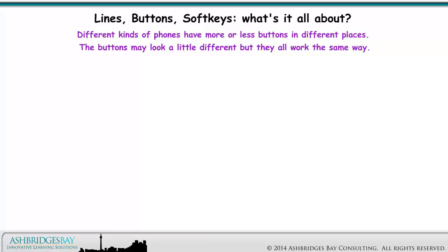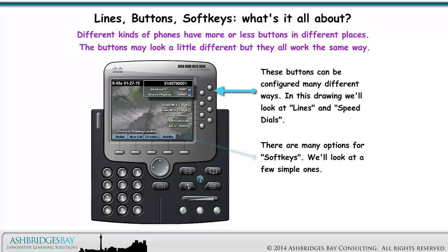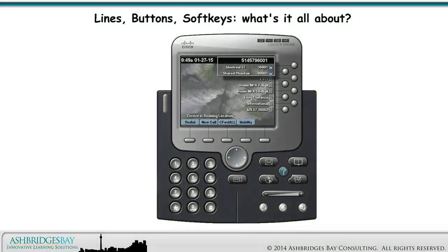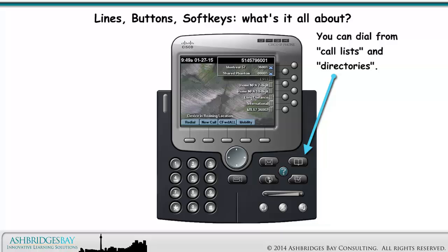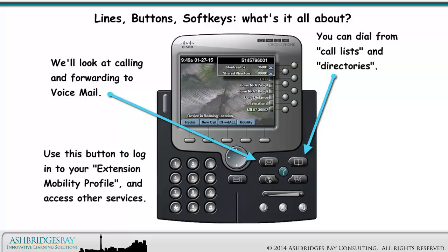Different kinds of phones have more or less buttons in different places. The buttons may look a little different, but they all work the same way. These buttons can be configured many different ways. In this drawing, we'll look at lines and speed dials. There are many options for soft keys — we'll look at a few simple ones. All phones have something like the 4-way navigation pad and select button. You can dial from call lists and directories. We'll look at calling and forwarding to voicemail. Use the services button to log into your extension mobility profile and access other services.